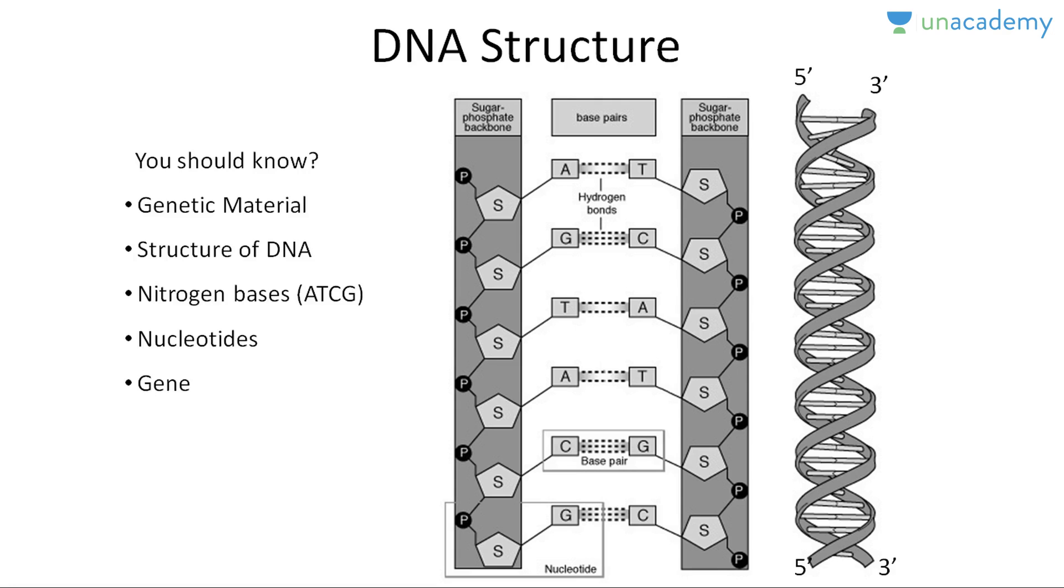Now the next concept is what are nucleotides. We can see in this diagram there is this P, this S, this A. This PSA forms one nucleotide. Now what is this PSA? P is the phosphate group, and S is the deoxyribose pentose sugar, while A is the nitrogenous base. These three comprise a nucleotide unit. Now these nucleotide units are bonded with each other with the phosphate bond, as you can see in this diagram.